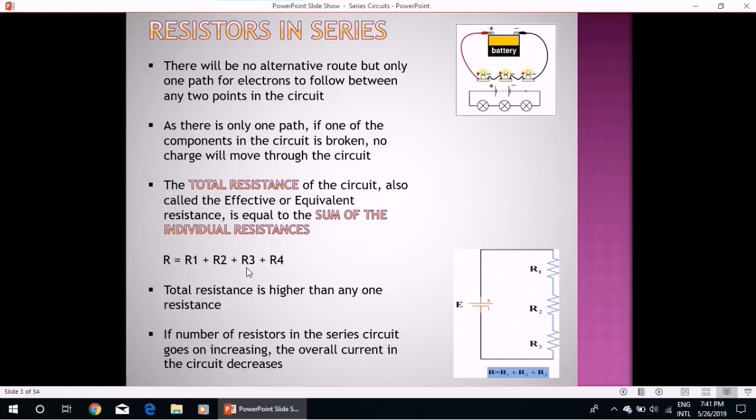For example, if there are four resistances in series, then total resistance will be equal to the sum of the individual resistances. If there are three resistances in series, then total resistance will be equal to sum of the three resistances. It can be seen that total resistance is higher than any one resistance.